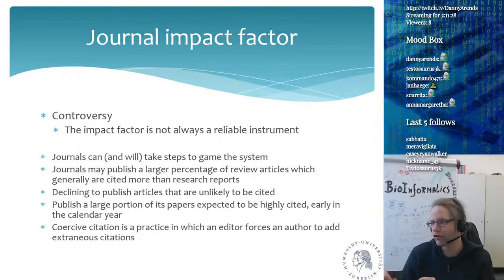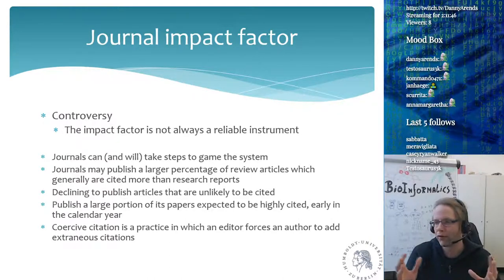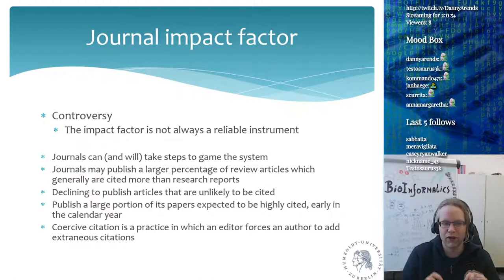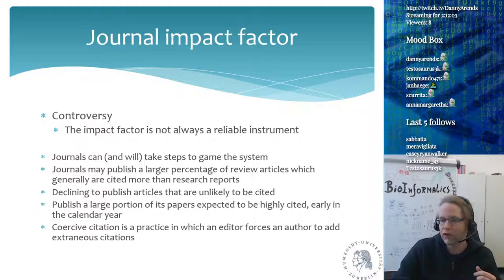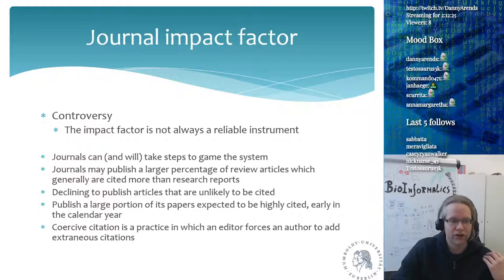Novel research doesn't rack up a lot of citations in general, but an article which nicely describes all of the available literature will get cited much more because it gives an overview of everything. There's also the fact that journals decline to publish articles unlikely to be cited, which is bad for science. If you're working in a field with only five other people, a journal may say 'we're not going to publish that because we won't get the citations.'